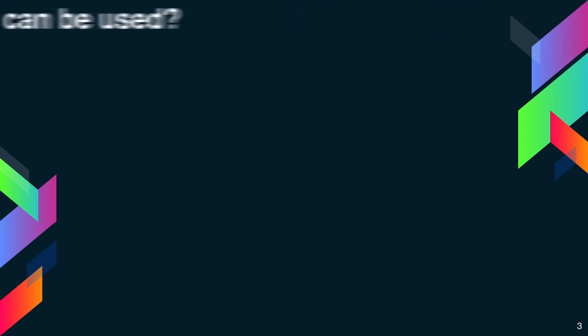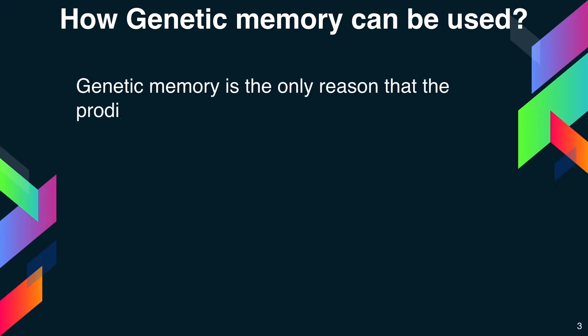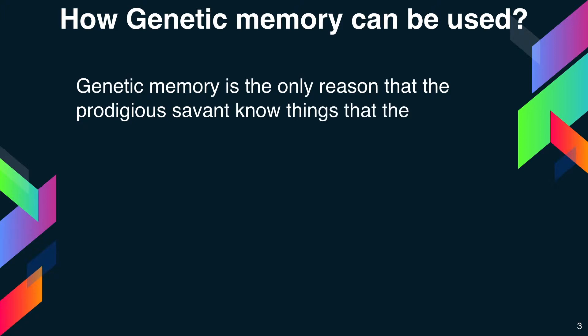Genetic memory is the reason that prodigious savants know things that they have never learnt. They have some unique qualities and are basically not aware of, or have not previously learnt, those skills. This is how genetic memory is the major reason for them to know things they have never learnt.